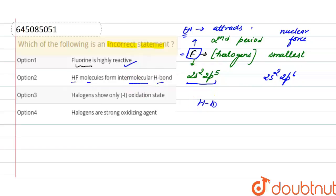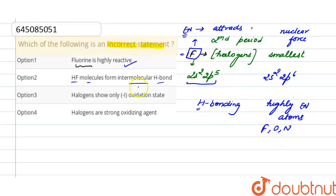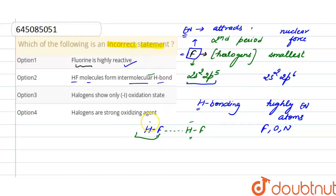Next, HF molecules form intermolecular hydrogen bonding. For hydrogen bonding, the requirement is that hydrogen bonds with highly electronegative atoms. These atoms are fluorine, oxygen, and nitrogen. In the HF molecule, fluorine is present, which is a highly electronegative atom, and this fluorine will bind with hydrogen in the same or different molecules, so HF will form intermolecular hydrogen bonding.